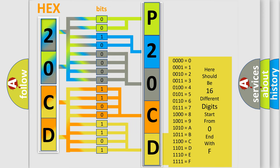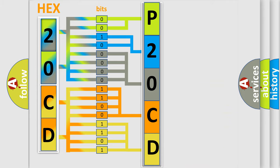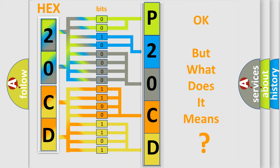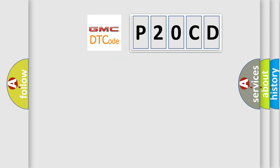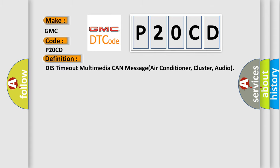We now know in what way the diagnostic tool translates the received information into a more comprehensible format. The number itself does not make sense to us if we cannot assign information about what it actually expresses. So, what does the Diagnostic Trouble Code P2OCD interpret specifically for GMC car manufacturers? The basic definition is: timeout multimedia CAN message — air conditioner, cluster, audio.